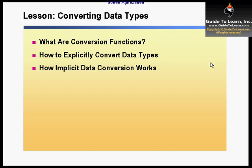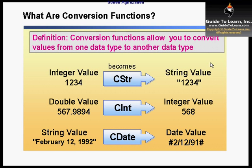The last section before we get into the first section of this specific class and do lab 3.1 talks about converting data types. There are available conversion utilities that are basically fairly familiar to you, perhaps if you have been doing VB for a long time. You could use C, which stands for conversion, and then the type: convert to string, convert to integer, convert to date, and many other types available throughout the MSD and library.